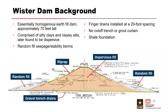Worcester Dam is owned and operated by the Corps of Engineers and is located near Worcester, Oklahoma. It is essentially a homogeneous embankment dam comprised of silty clays and clay silts with an average plasticity index of nine, which were found to be dispersive after construction. It has random fill seepage and stability berms upstream and downstream, comprised primarily of shale and sandstone. Finger drains were constructed over the downstream two-thirds of the embankment, and the embankment was built on a shale foundation with no cutoff trench and without a grout curtain.